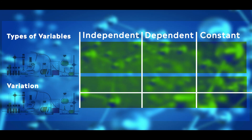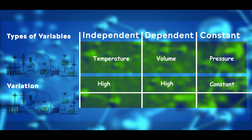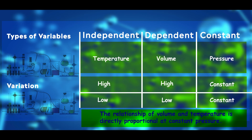Fill in the table by referring to the previous illustration. The independent variable was temperature, the dependent variable was volume, and what was kept constant was pressure. As temperature rises, the volume also rises; and as temperature decreases, the volume decreases accordingly at constant pressure.